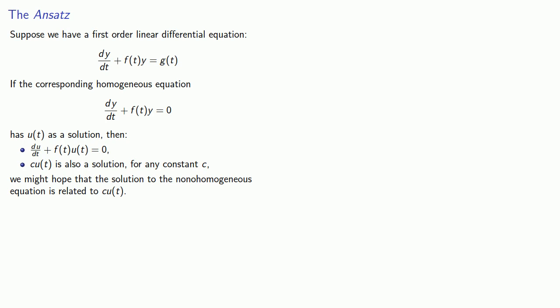So I've got to come up with an ansatz, a wild, educated guess of what the solution might be. In this particular case, to obtain a solution, we'll allow the parameter c to vary. In other words, we'll let c be a function.